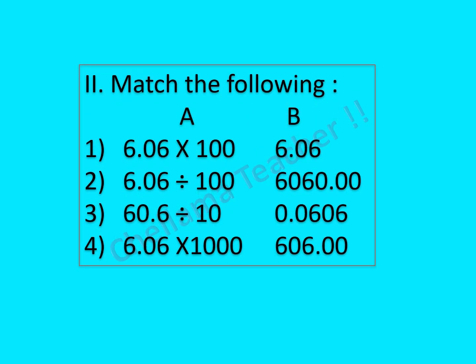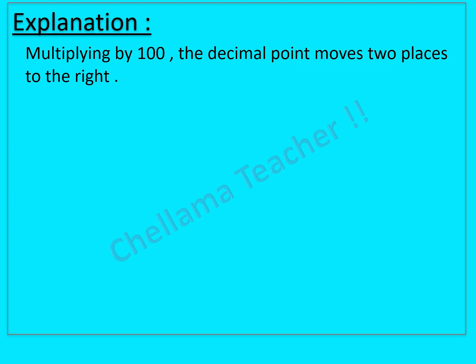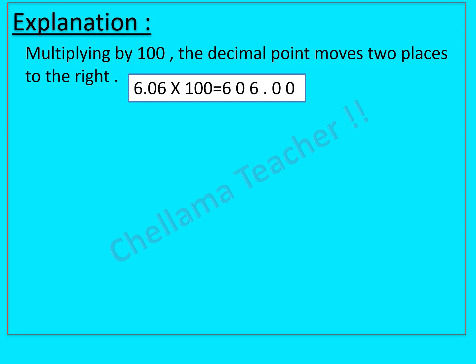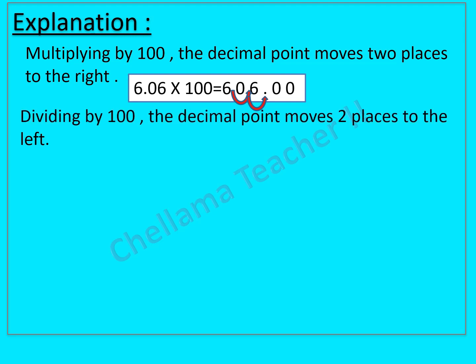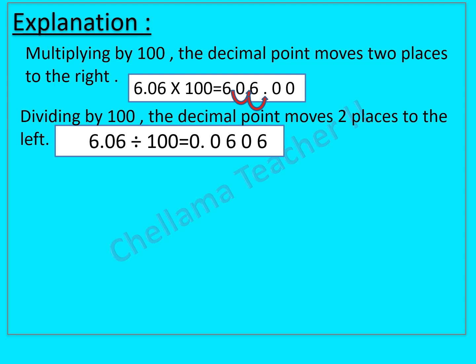Next part is Match the Following — 4 questions based on multiplication and division of decimals. Multiplying by 100 moves the decimal point 2 places to the right: 6.06 × 100 = 606.00. Dividing by 100 moves the decimal point 2 places to the left: 6.06 ÷ 100 = 0.0606.